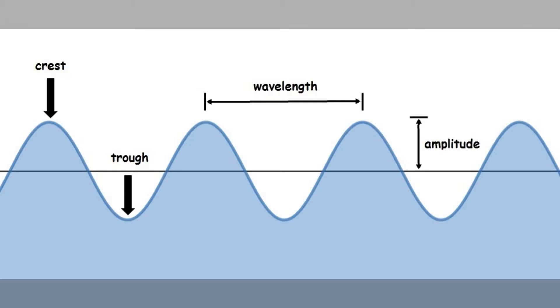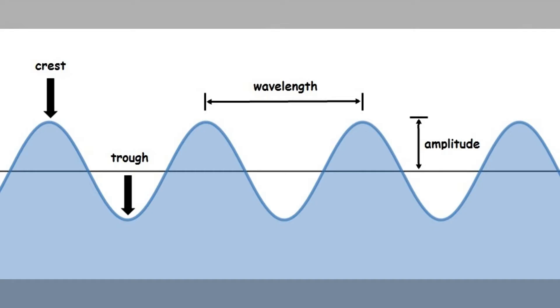Now let's talk about the anatomy of a wave — the parts of a wave. If I look at a diagram of a wave, I can see that the shape of the wave goes up to the top and then comes back down to the bottom. Scientists, because they like to name everything, have named the top and the bottom of the wave. The top of the wave is called the crest — you may have heard that term. The crest applies to sound waves, earthquake waves, and any kind of wave. The bottom of the wave is called the trough — the opposite of a crest, down at the bottom.